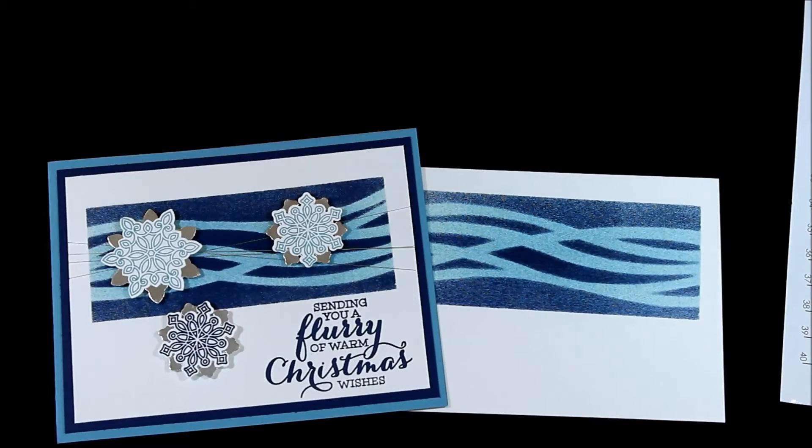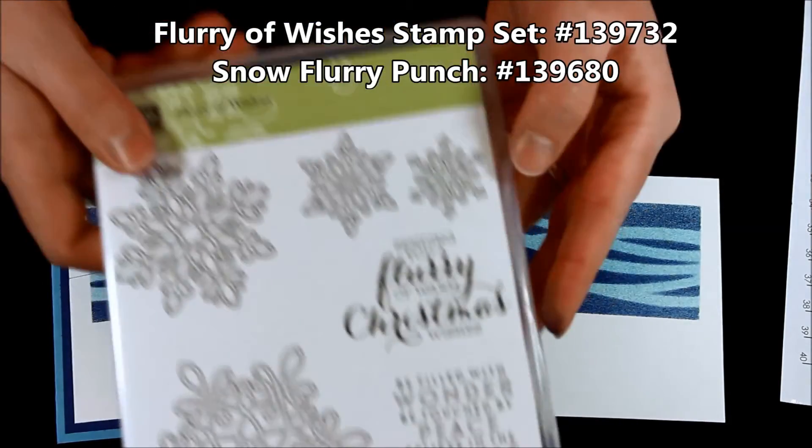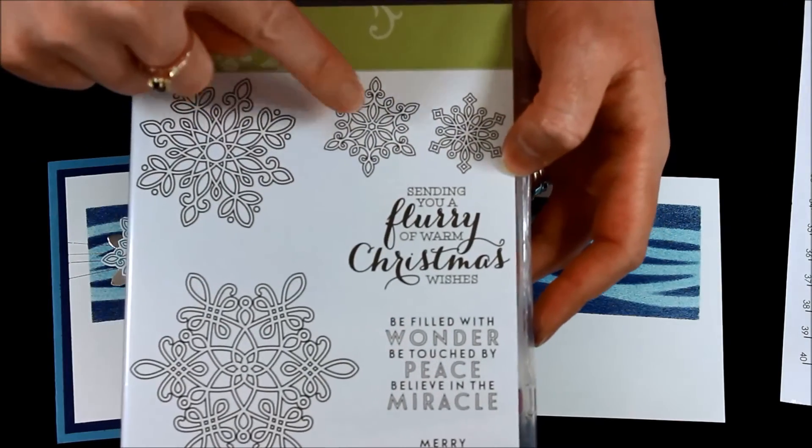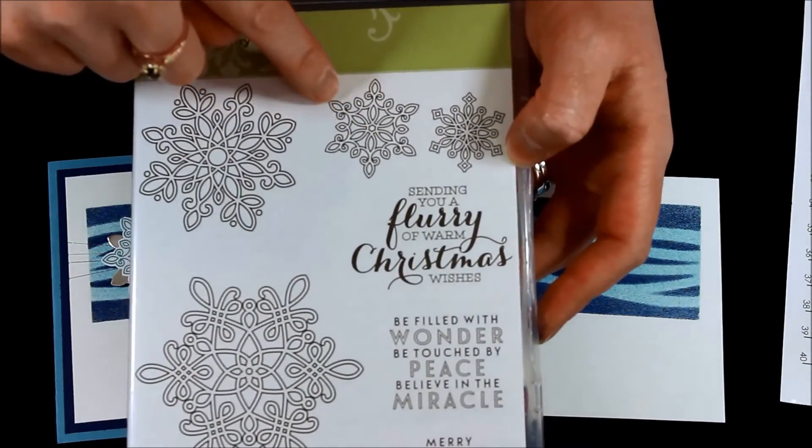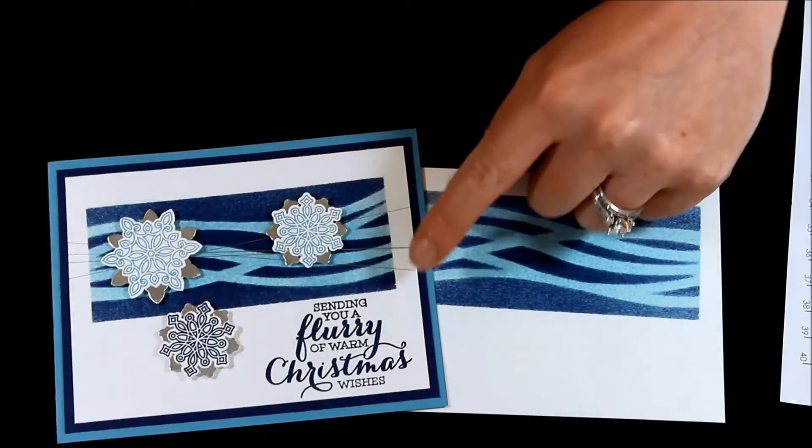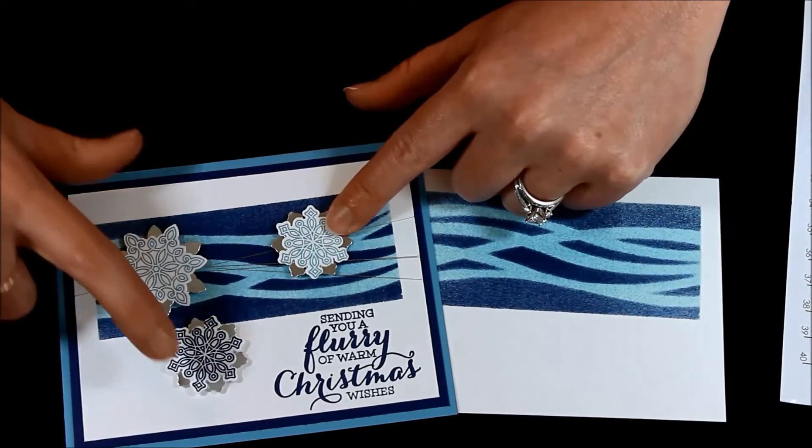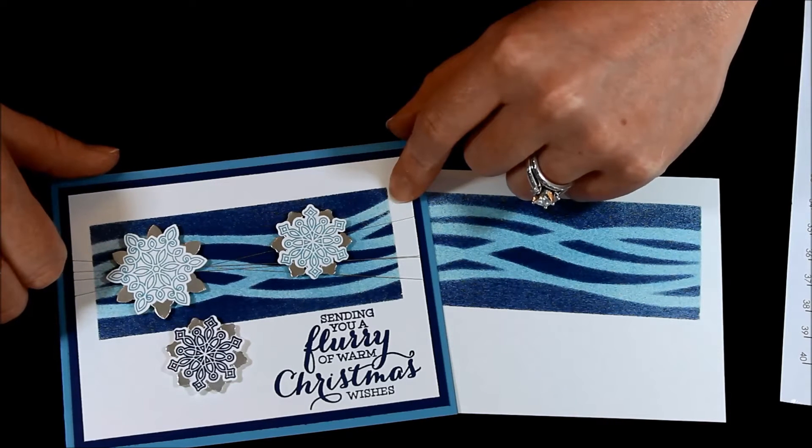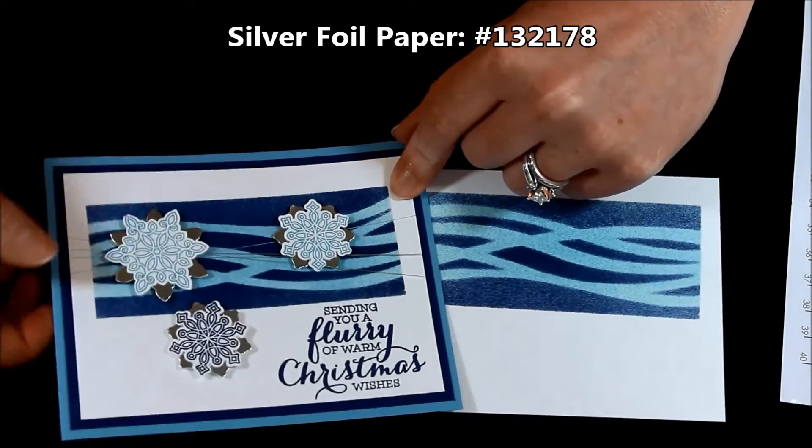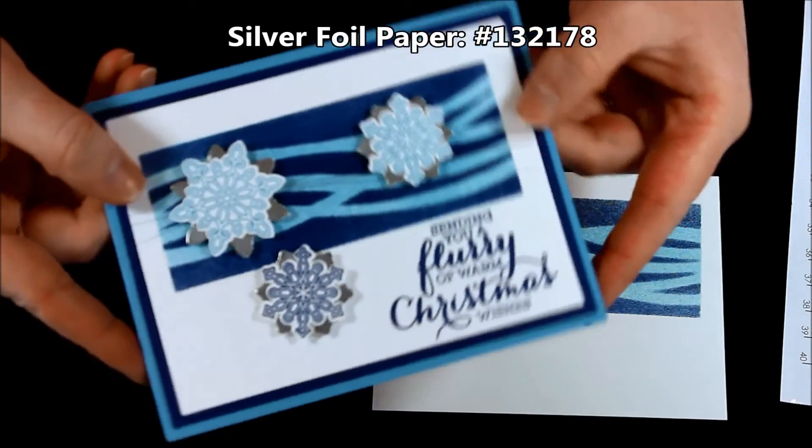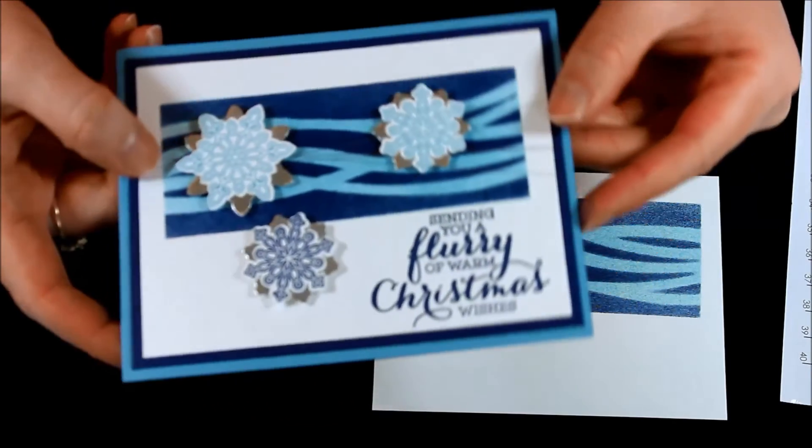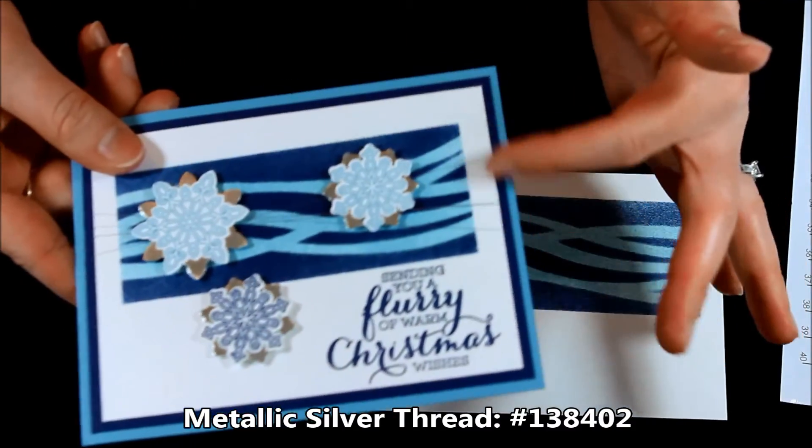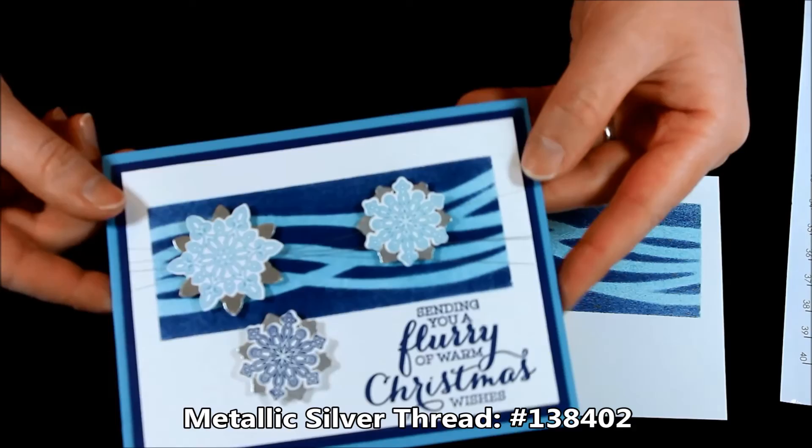Here's the original sample. I just used the Flurry of Wishes stamp set and the coordinating punch. It's got the big snowflakes and then it's got this double snowflake which also coordinates with the punch. And then these greetings too. So I punched the snowflakes out. I did two in Marina Mist and one of Night of Navy. And then I also punched out the same snowflake size in silver foil paper and then I just offset those. I also added some of the metallic silver thread and just kind of looped it around and fanned it out on the ends. And then it kind of comes together hidden under there.